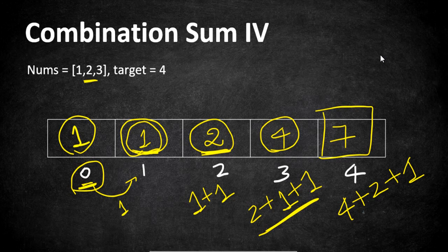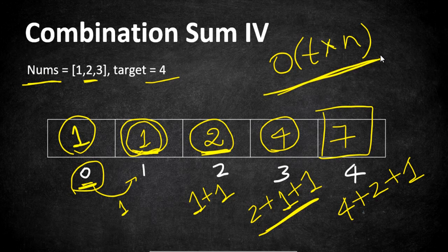Hope I made it clear. We are going to iterate this DP array and fill it for the target value given and the number of values given in the nums array. Overall it is going to take O(t × n) time, where t is the given target value and n is the number of elements in the nums array. Let's go to the code now.